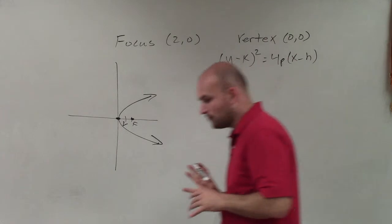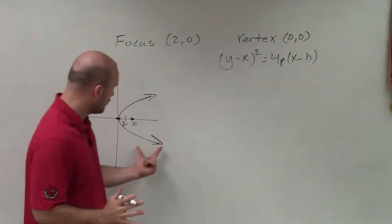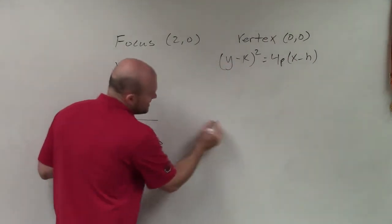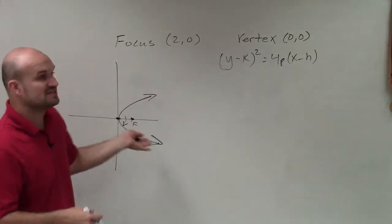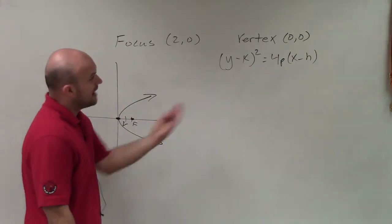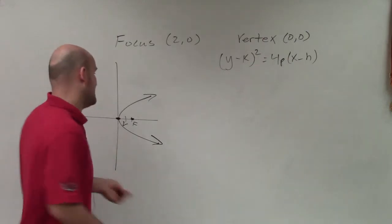Now again, that is my standard form when my parabola is going to be horizontal, or going to have a horizontal axis of symmetry. If it was vertical, the x and y's would be swapped. So now what I'm going to do is I just need to plug in the information that I have.